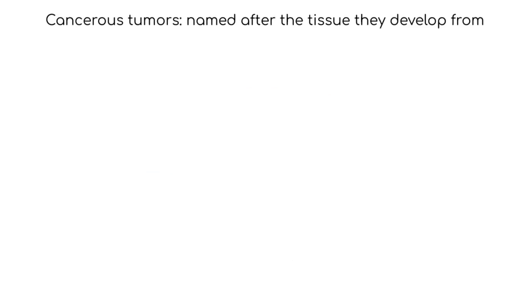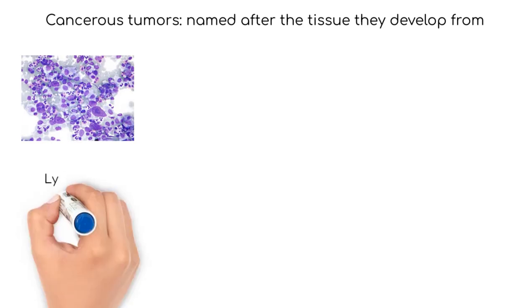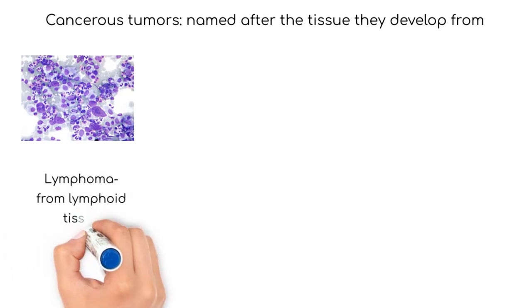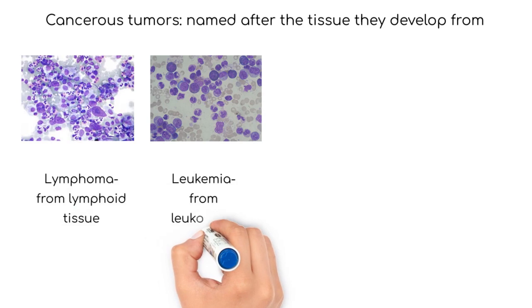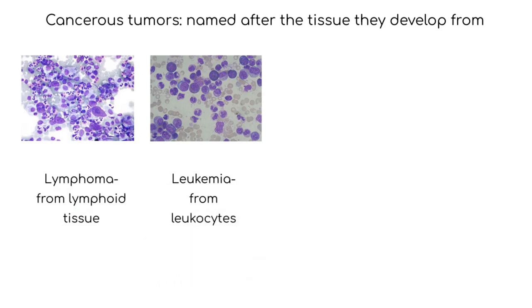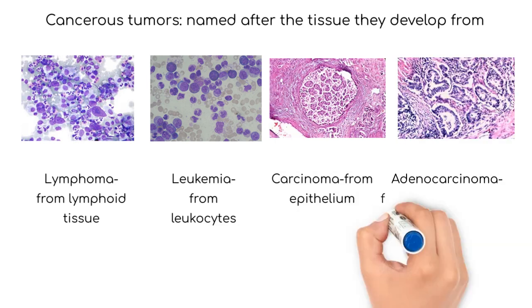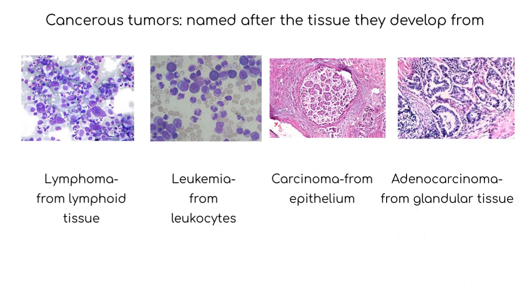Cancerous, or malignant tumors, are also named after the tissue from which they develop. Examples include lymphomas, which develop from lymph nodes; leukemia, which develops from leukocytes or white blood cells; carcinomas, which develop from epithelial tissue; and adenocarcinomas, which develop from glandular tissue.